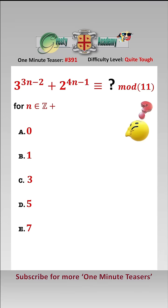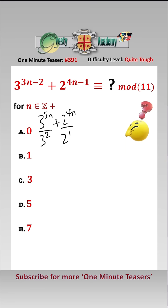So we can rewrite this as 3 to the power of 3n over 3 squared, add 2 to the power of 4n over 2 to the power of 1, which equals 27 to the power of n times 9 to the minus 1, add 16 to the power of n times 2 to the minus 1.